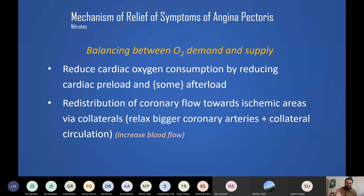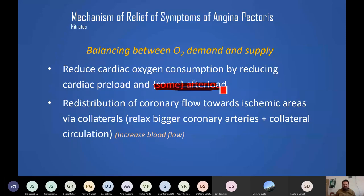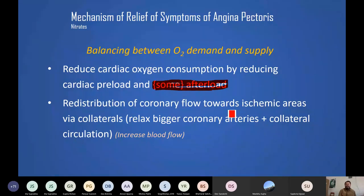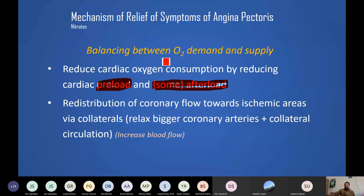The basic mechanism is NO donation, which reduces oxygen consumption by reducing cardiac preload and some afterload. Nitrates only dilate arteries at higher doses; at lower therapeutic doses they act mainly as venodilators, reducing preload. To reduce both preload and afterload, we can add calcium channel blockers, which can be combined with nitrates to achieve better arterial and venous dilation than simply increasing the nitrate dose.